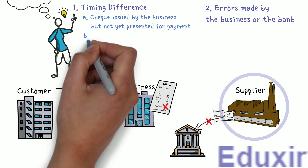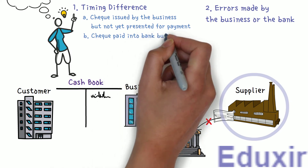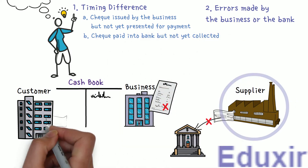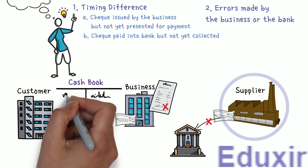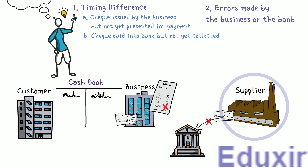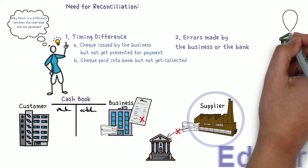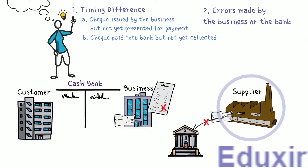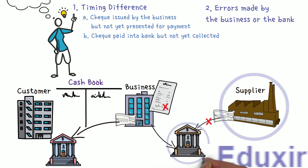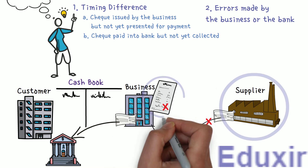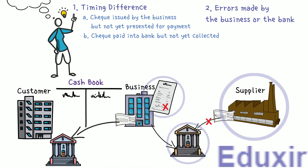The next reason is checks paid into the bank but not yet collected. When the business receives checks from its customers or debtors, they are immediately recorded on the debit side of the cashbook, so the cashbook shows more amount available in the bank. These checks could be from a bank not in the same city or from a different branch. The bank may not have collected this check amount by the time the bank statement is received, causing a difference in the cashbook and passbook balances.